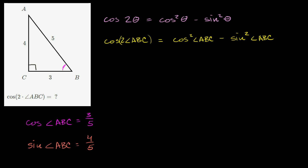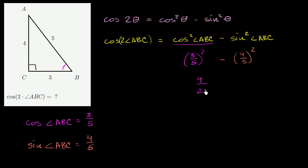This is just going to be equal to 3 fifths squared — cosine of angle ABC is 3 fifths, so we square it — minus 4 fifths squared. So this simplifies to 9 over 25 minus 16 over 25, which is equal to negative 7 over 25.